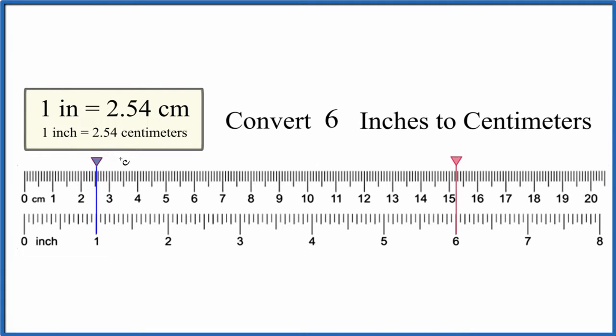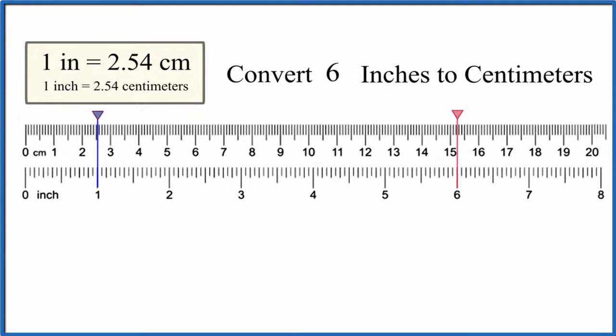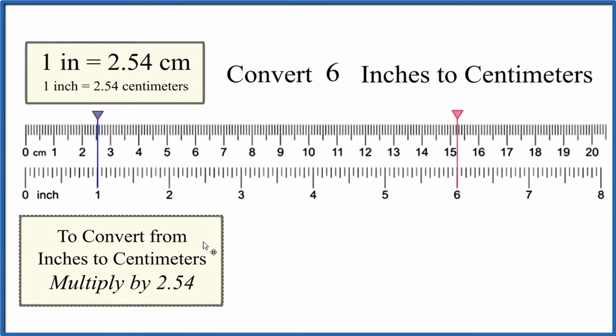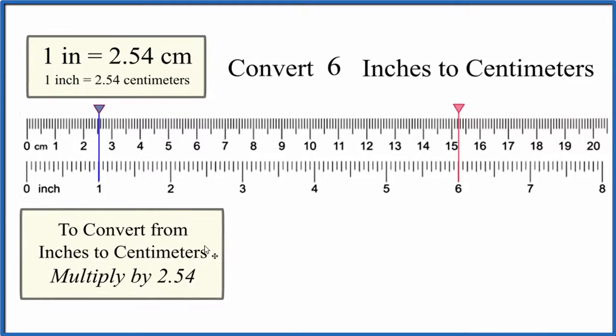So when we convert from inches to centimeters, that's really valuable to know, because now all we need to do to convert from inches to centimeters is multiply by 2.54. So we take our six inches here and multiply it by 2.54 to get centimeters.